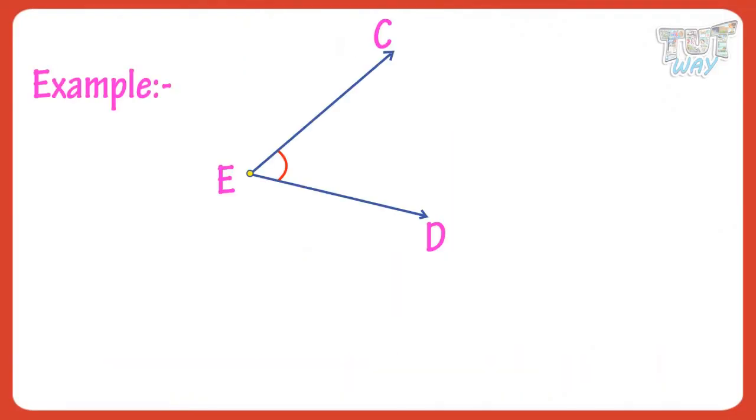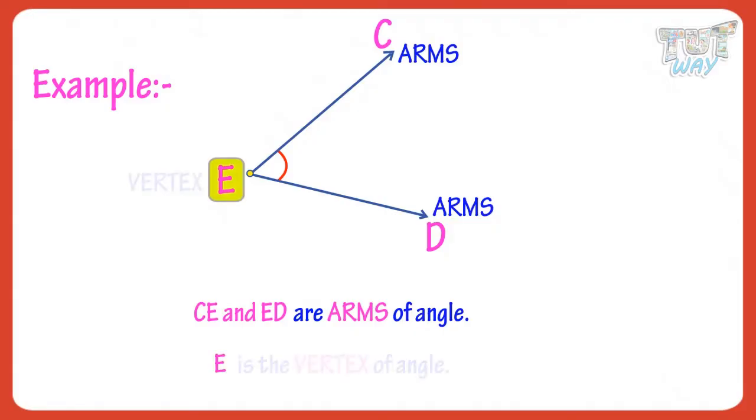Here, CE and ED are arms of an angle, and E is the vertex. And CED is the angle represented like this.